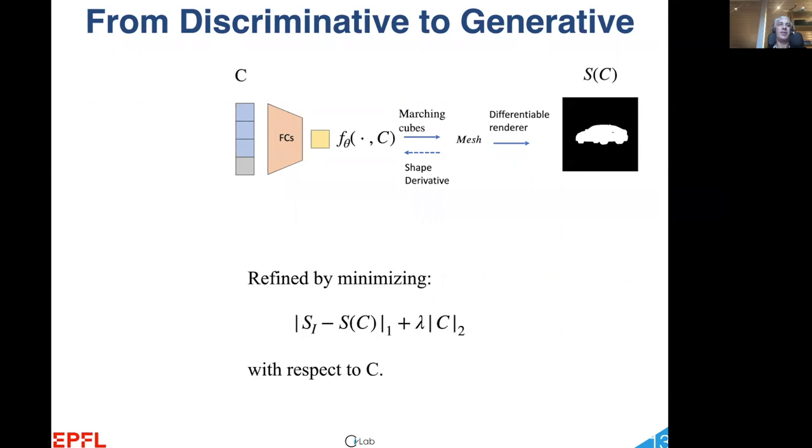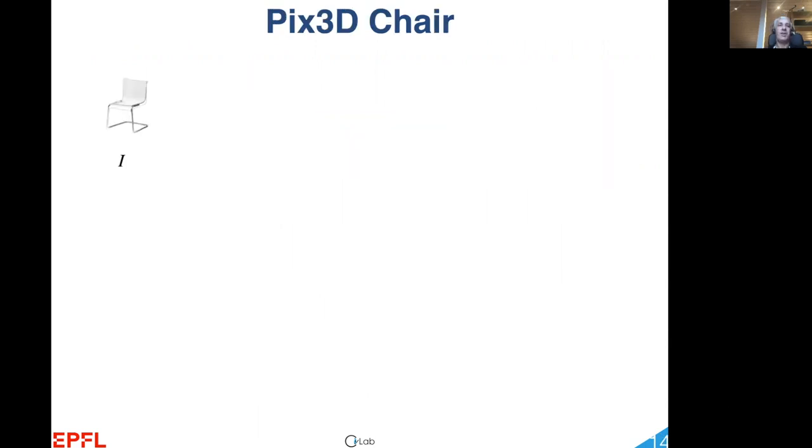We can then exploit the differentiability of the loss function to refine C and maximize the overlap between the 3D predicted shape's projection and the true object outline. We feed as input to the encoder an image I of a chair from the Pix3D dataset.